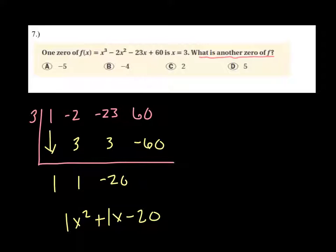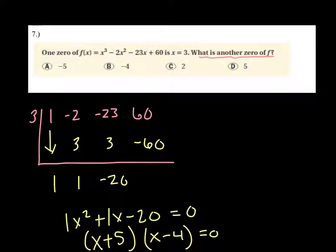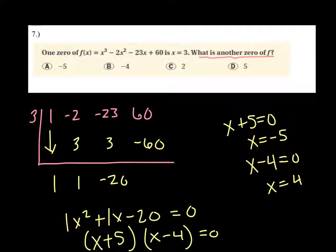If we're trying to solve, remember we can set f of x or y as 0 and then just factor this. So what multiplies to get you negative 20 but adds to get you 1, x plus 5 and x minus 4. So when you actually set those factors equal to 0, you get x to be negative 5 and x to be positive 4.